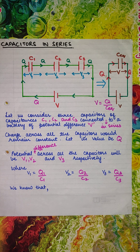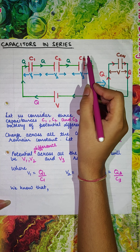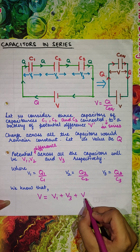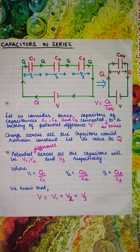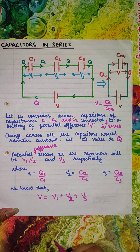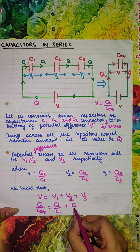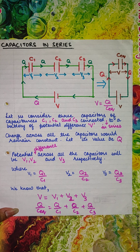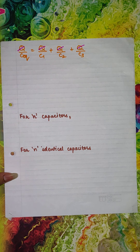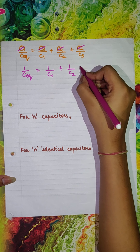V can be written as Q by C equivalent. Now we know that the potential difference across the 3 capacitors, if we add all of them, we would get the net potential as the potential of the battery. So V would be equal to V1 plus V2 plus V3. Substituting the known values, we can write Q by C equivalent is equal to Q by C1 plus Q by C2 plus Q by C3. Cancelling Q from both sides, we get 1 by C equivalent is equal to 1 by C1 plus 1 by C2 plus 1 by C3.